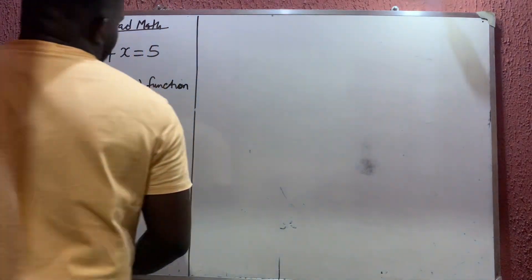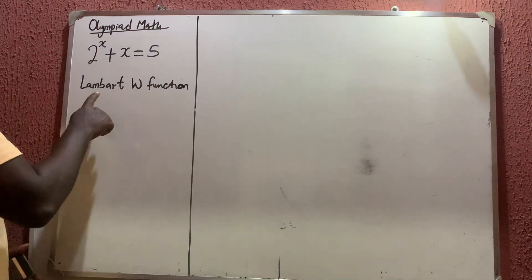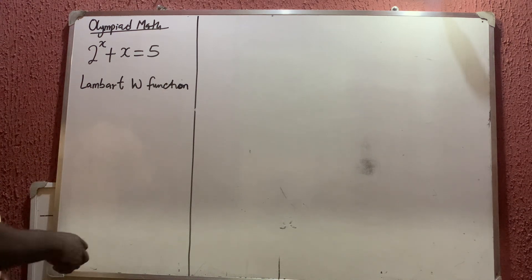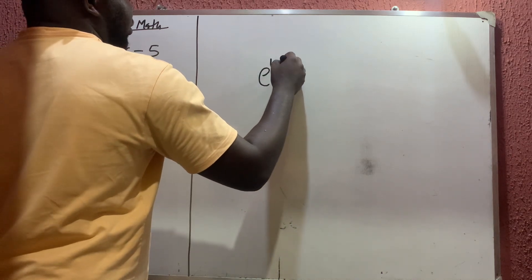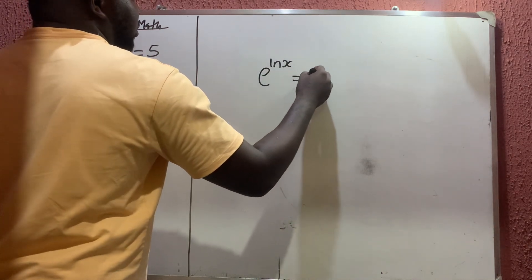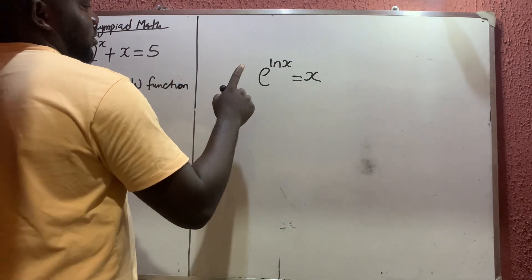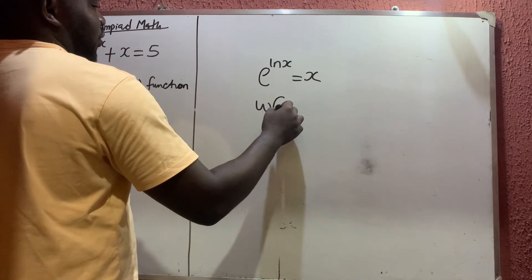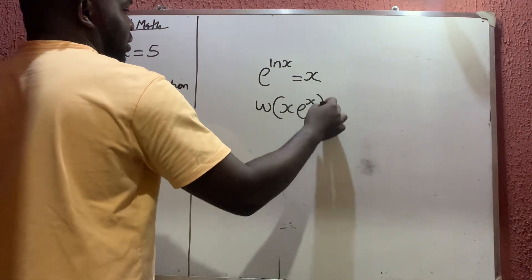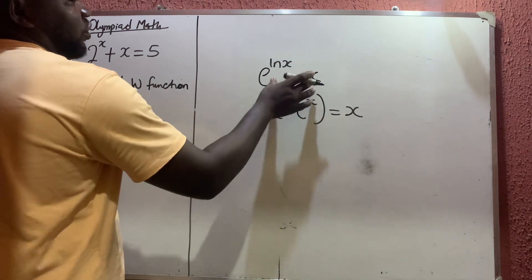Let us quickly solve this olympiad math problem. To solve this type of problem, you need to know what we call the Lambert W function. The same way you know that e raised to the power of ln of any number gives that same number, you need to know that the Lambert W function of any number times e raised to the power of that same number is just that number.